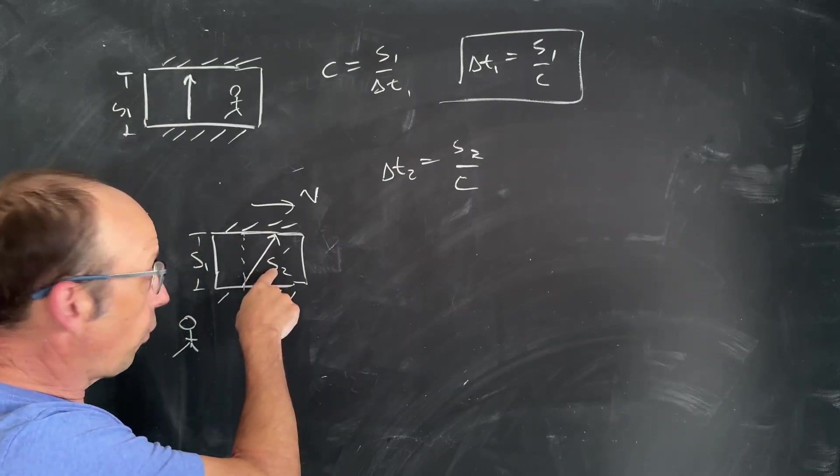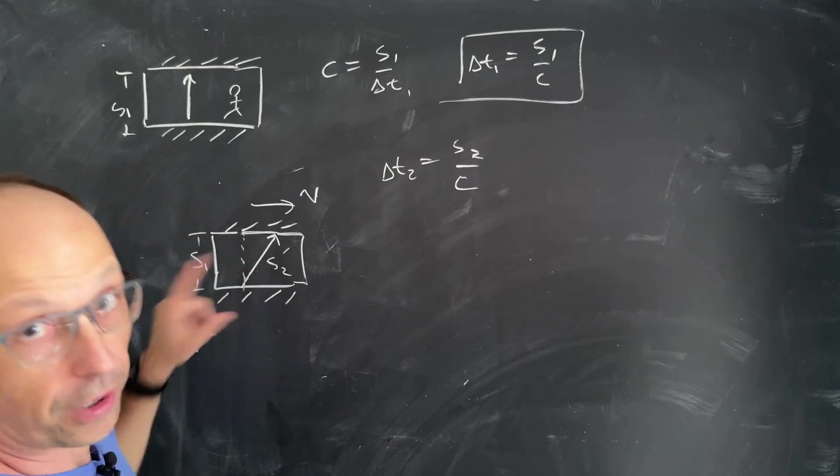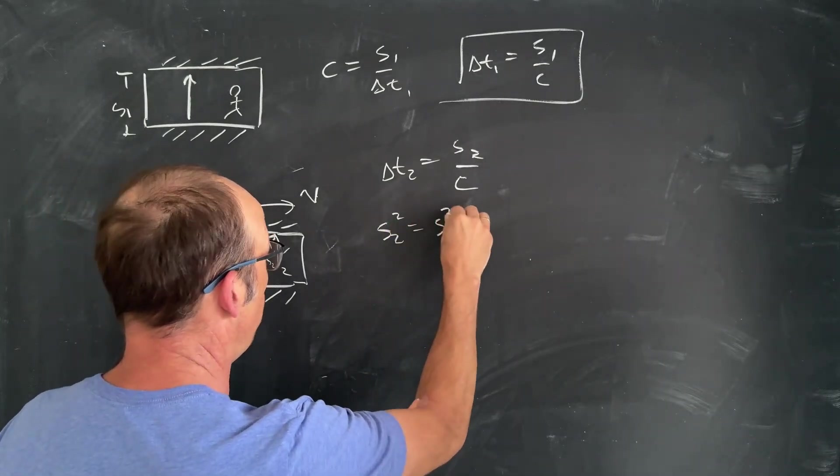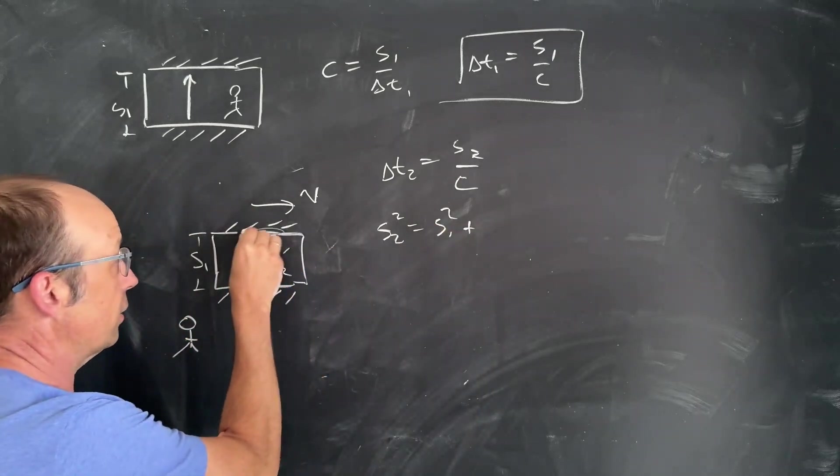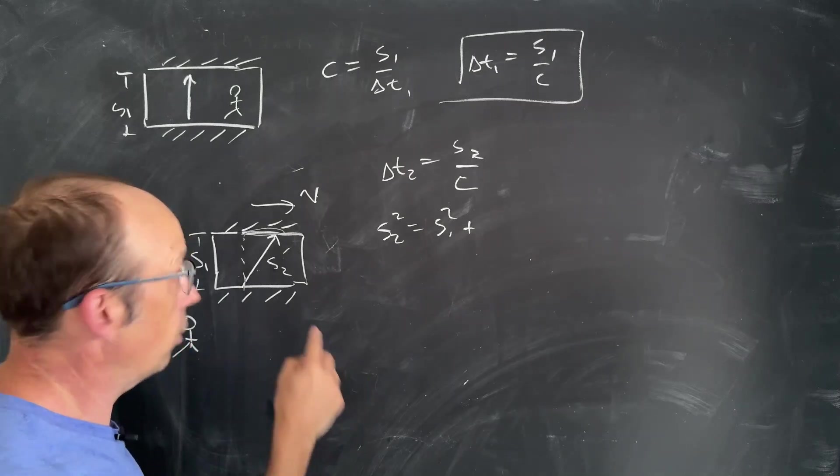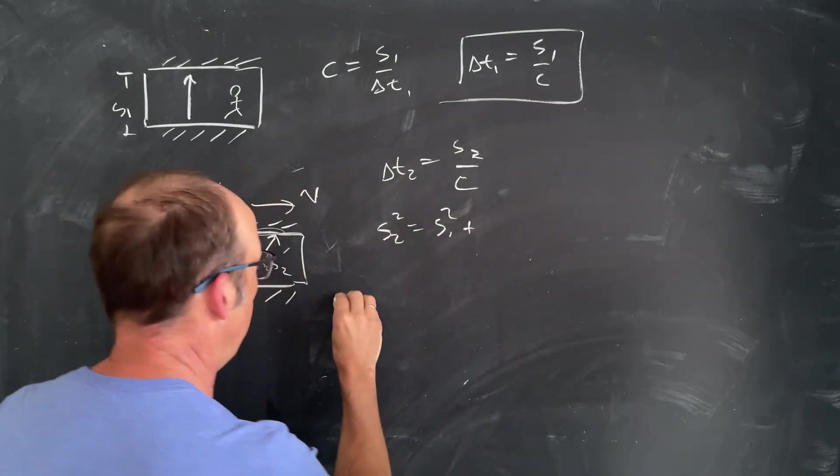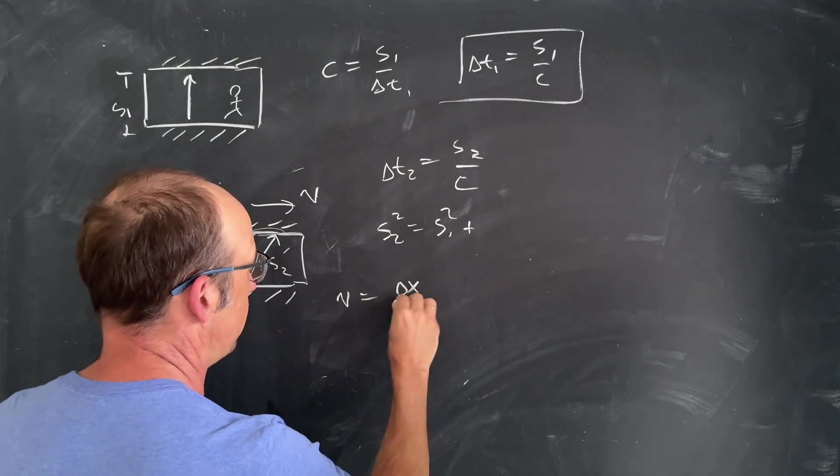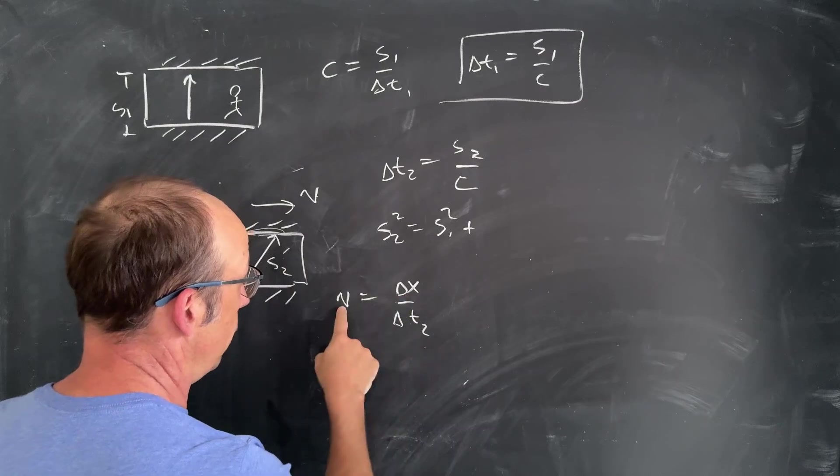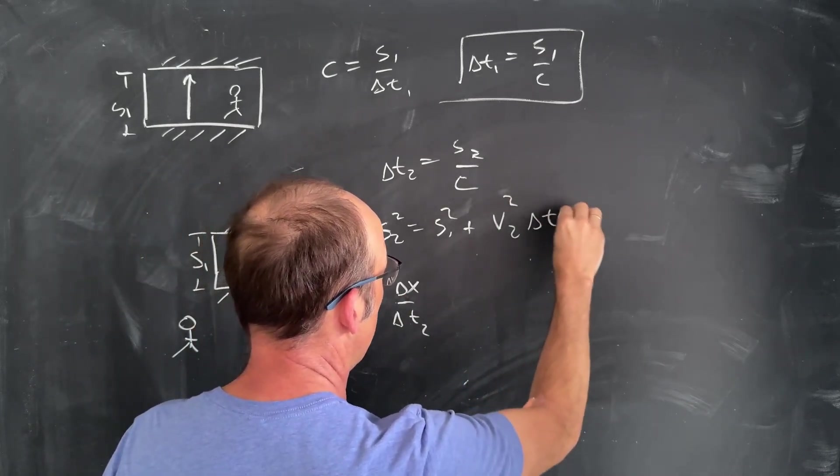We can get a relationship for S2 based on that distance and that distance. I can say it's a right triangle. So I can say S2 squared is S1 squared plus this extra distance. How far did it move during that time? I have delta T2, that's how long it took. And that is the velocity times delta T. So I can say the velocity is some delta X over delta T2. Delta X is going to be V delta T. So this is going to be plus V squared times delta T2 squared.